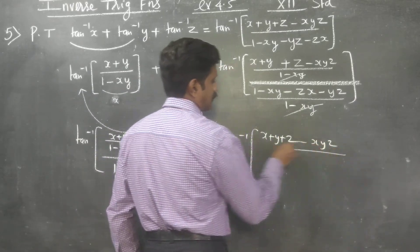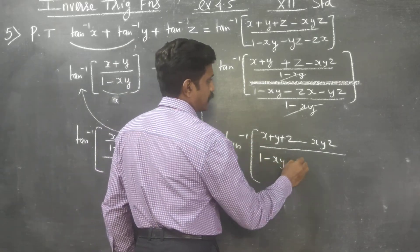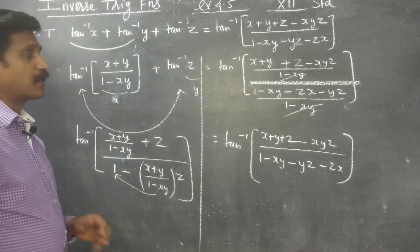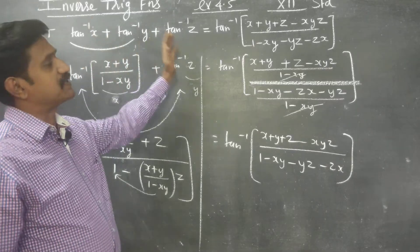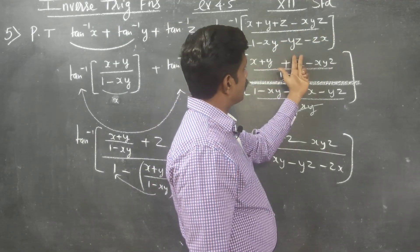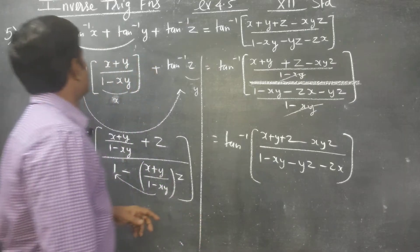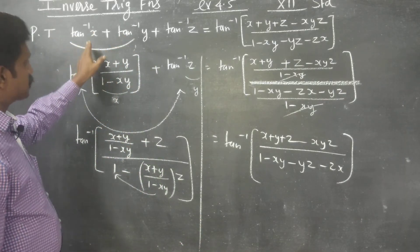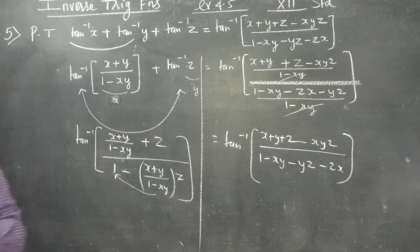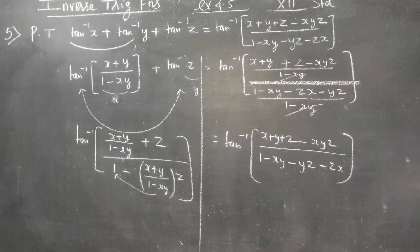All divided by (1 minus xy minus yz minus zx). This is a derived formula for tan inverse of x plus tan inverse of y plus tan inverse of z, which equals tan inverse of (x plus y plus z minus xyz) divided by (1 minus xy minus yz minus zx). We used the formula for two tan inverses and extended it to three. Thank you.